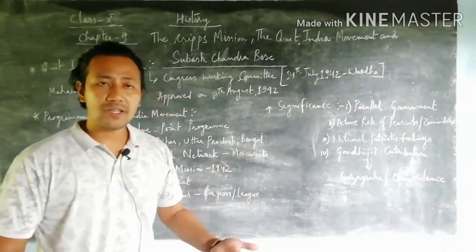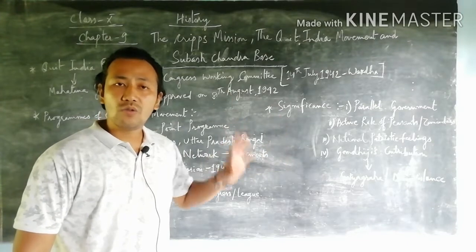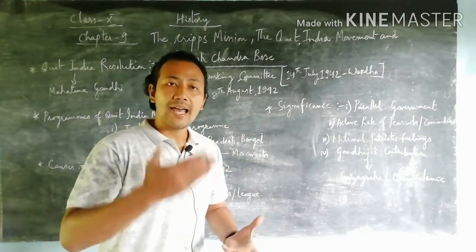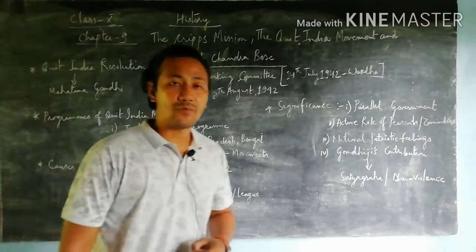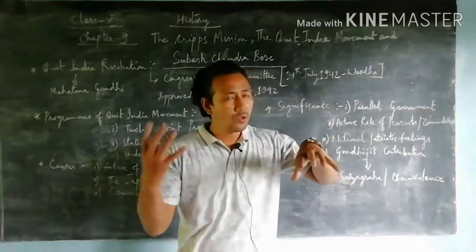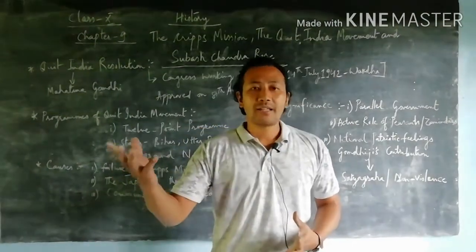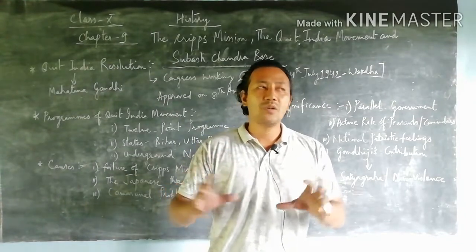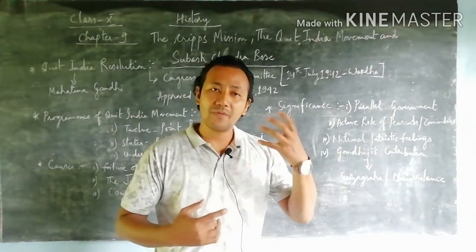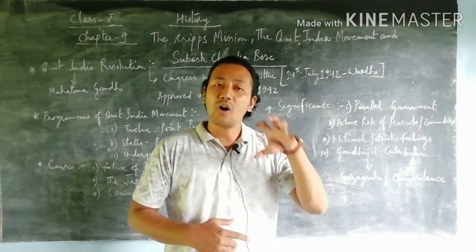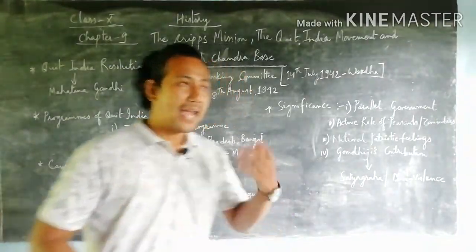States like Uttar Pradesh, Bihar, and Bengal became very active, following all the rules and regulations of the Quit India Movement's programs and planning. The third point is the underground network — after the Quit India resolution was formed, many leaders emerged, formed teamwork, and created small underground movements to challenge the British policies that were being used to humiliate or harass the Indian people.